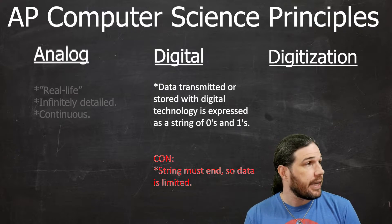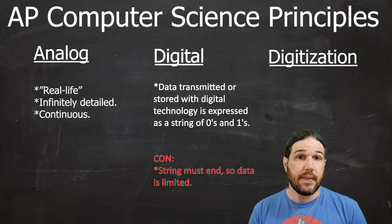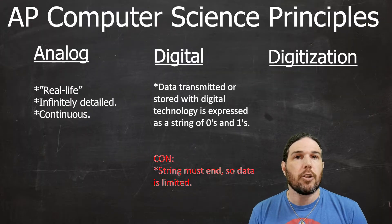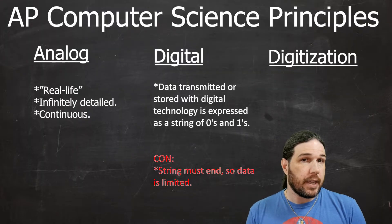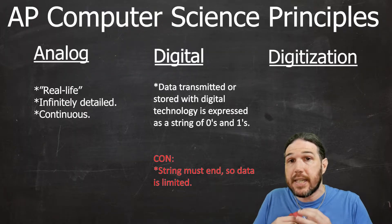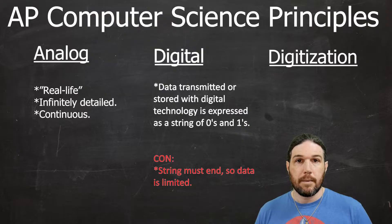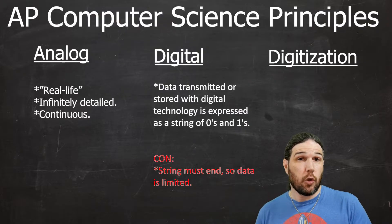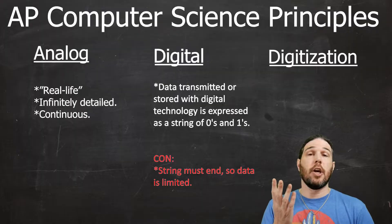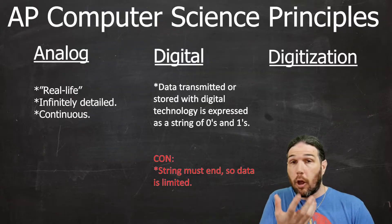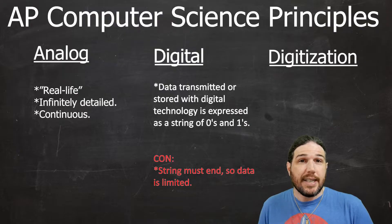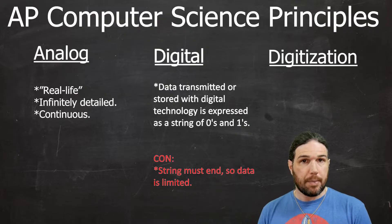Analog is everything around you — everything that you see, everything that you hear, everything you smell. That is all analog data because it can be cut into infinitesimally small continuous pieces. If I had the equipment, or really, really good vision, I would be able to see my hand all the way down to the cellular level, all the way down to the atomic level, and digital media just can't replicate that.